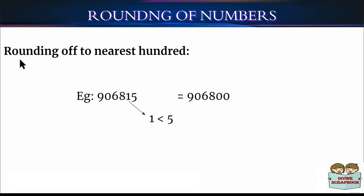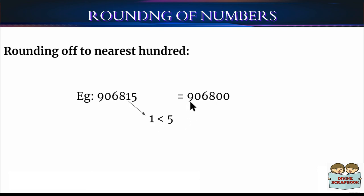Now, rounding off to the nearest 100. Let's take an example: 96,815. While rounding off to the nearest 100, we compare the 10's place digit with 5. It has 1 in its 10's place and 1 is less than 5, so we replace the 10's and 1's place digits with two 0's. The number after rounding off to the nearest 100 is 96,800.